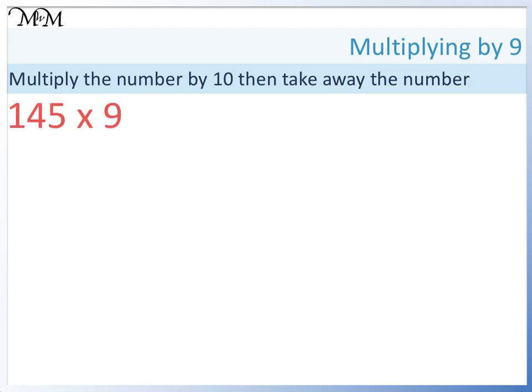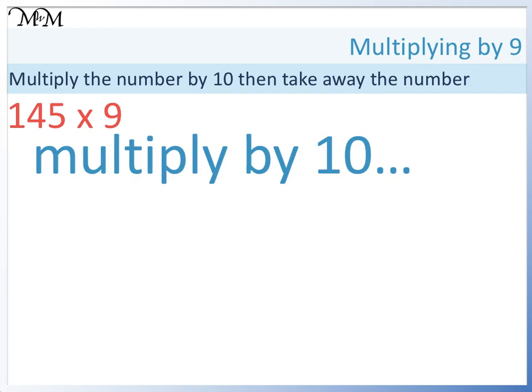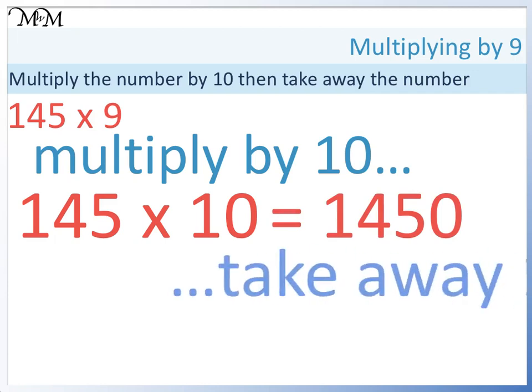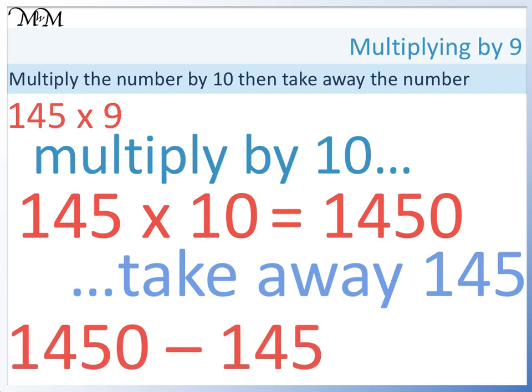145 times 9. This looks like a tricky calculation, but by using our method we will find that it is quite straightforward. We start by multiplying by 10. 145 times 10 equals 1450. We then take away 1 lot of 145. 1450 take away 145 equals 1305.